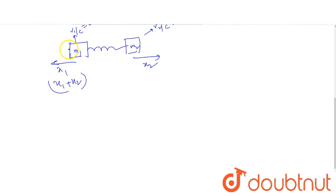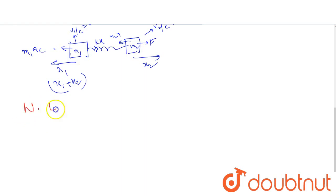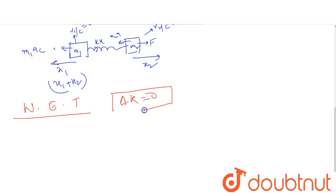In the center of mass frame, which forces do work? On m1 there is a pseudo force m1 times AC, and a spring force KX acts. On m2 there is a pseudo force m2 times A and the applied force F. So the net force on m2 in the center of mass frame is F minus m2·A.